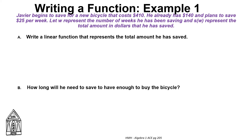This first example says: Javier begins to save for a new bicycle that costs $410. He already has $140 and plans to save $25 per week — that 'per week' should tell us something. Let W represent the number of weeks he has been saving, and S(W) represent the total amount of dollars that he has saved.